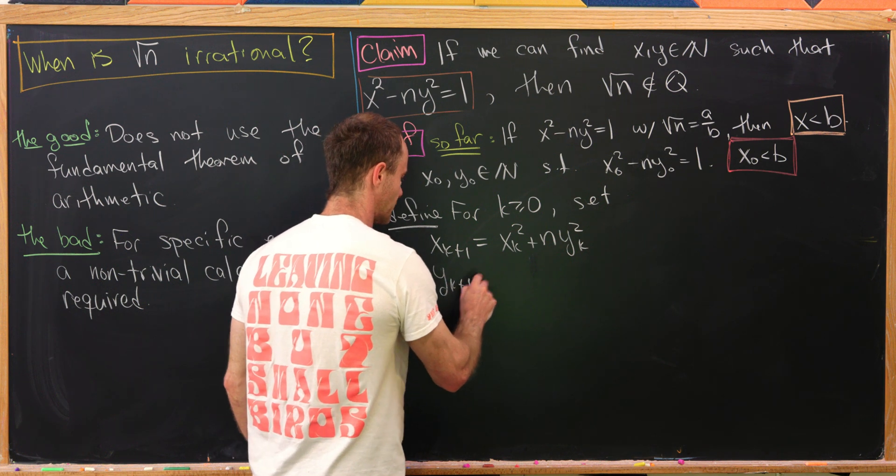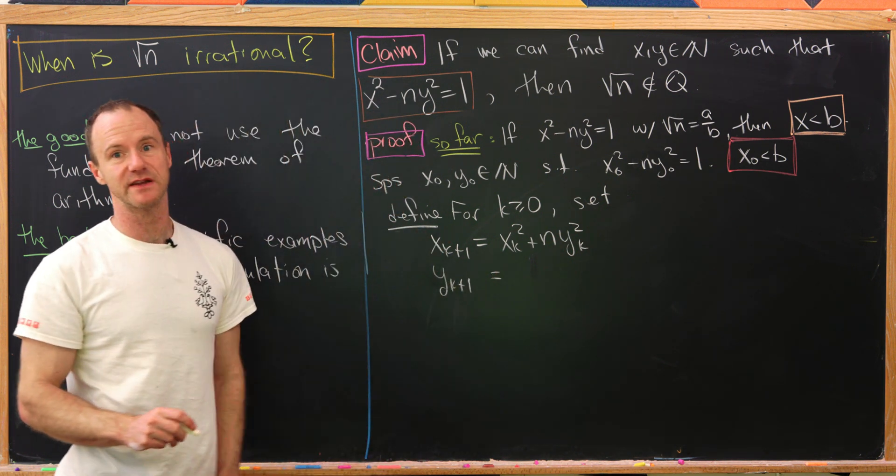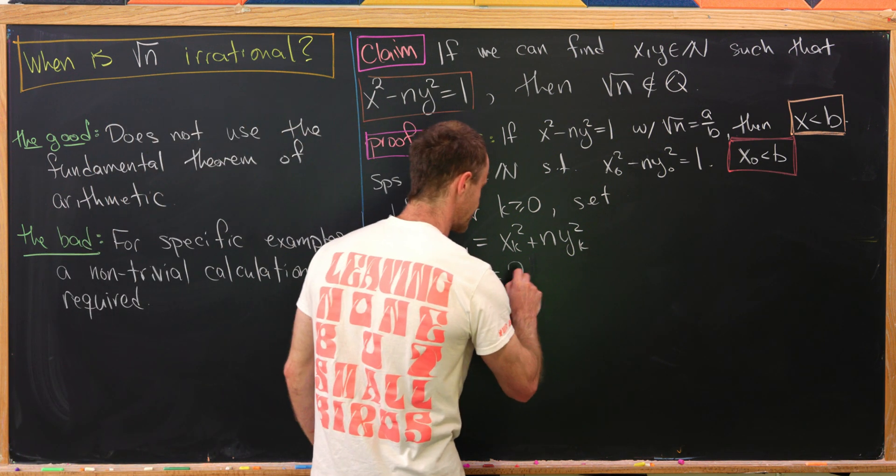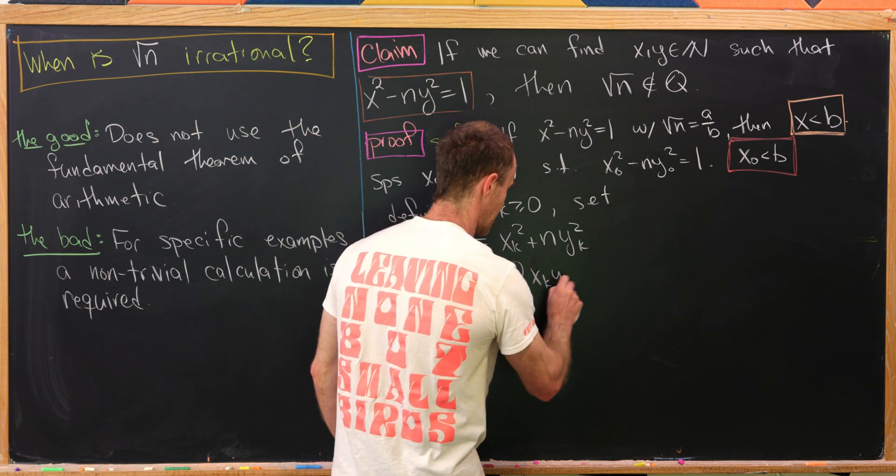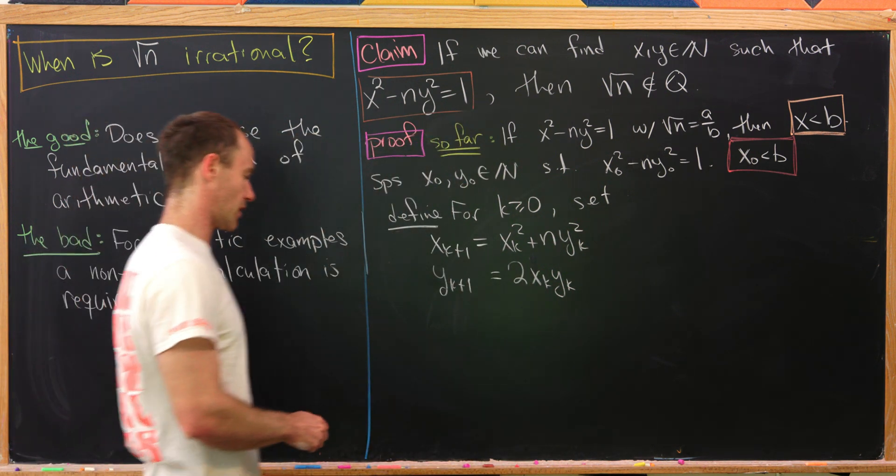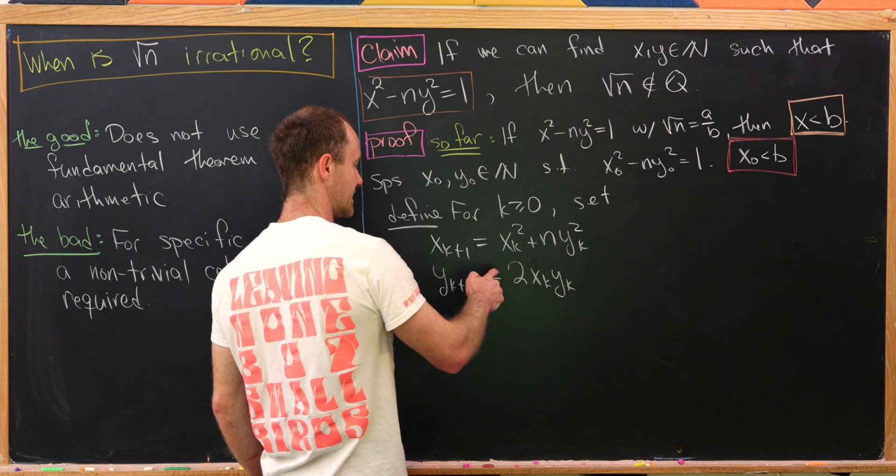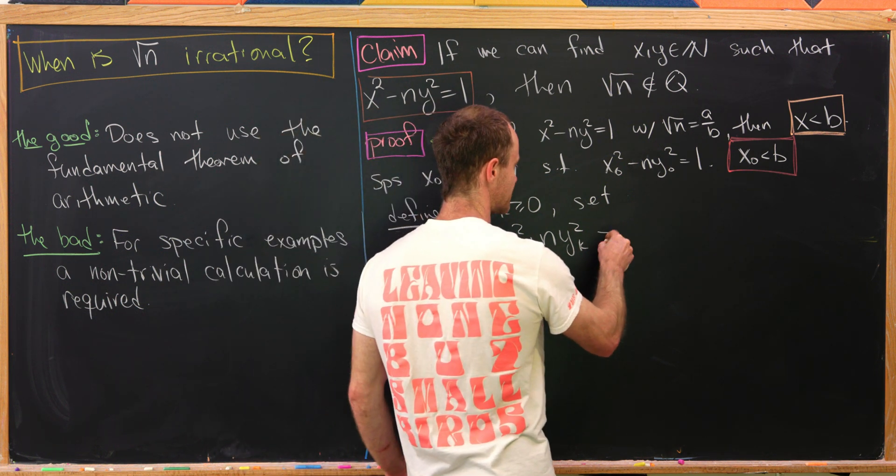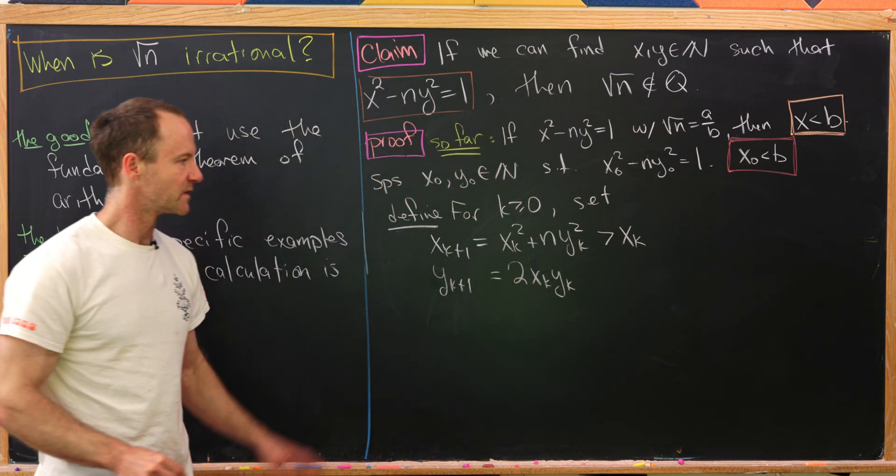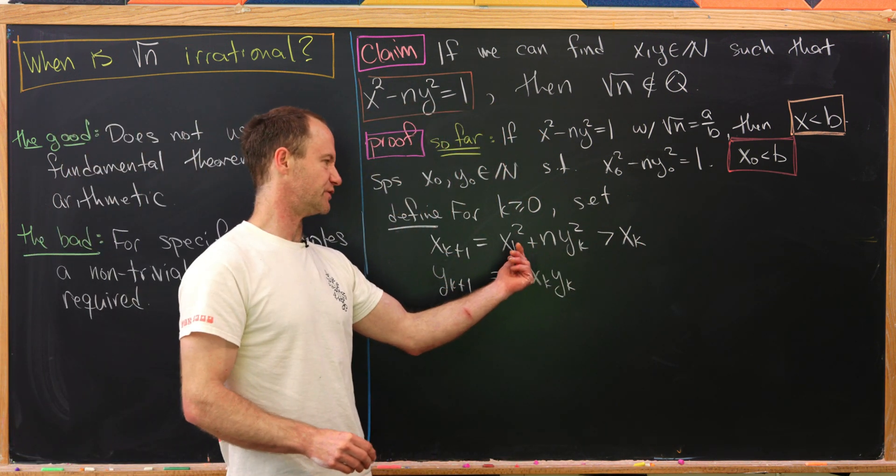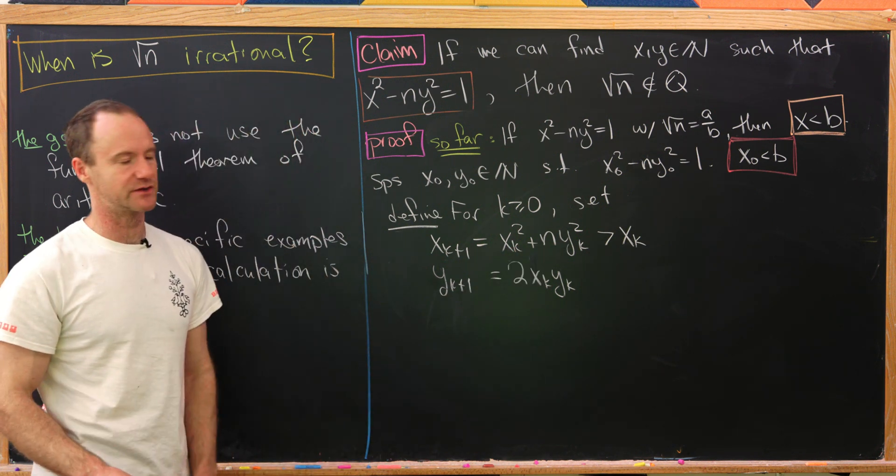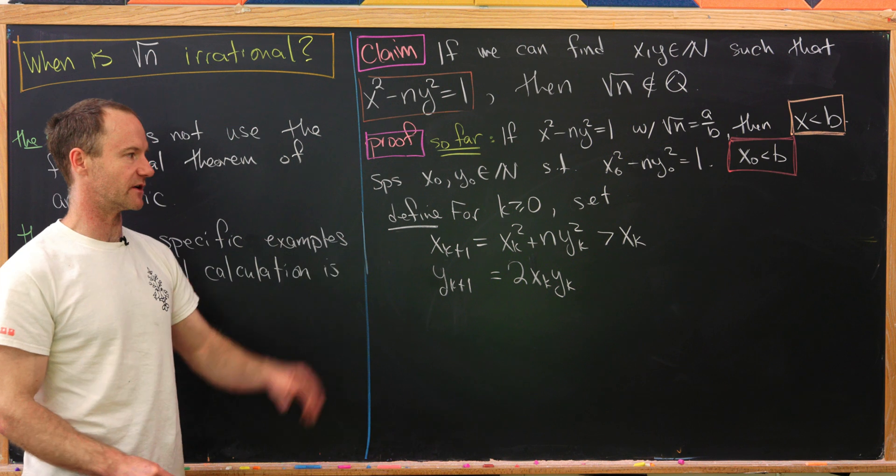Then we'll set y sub k plus 1 equal to 2 times x sub k times y sub k. Now here's a really important part of this, and that is that this x sub k plus 1 is most definitely strictly bigger than x sub k. I think that's clear because when you square a natural number, you get something larger, and then we're adding something to it. So that's most definitely bigger than x sub k.